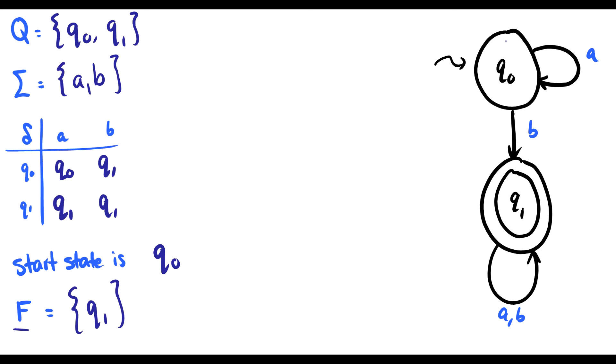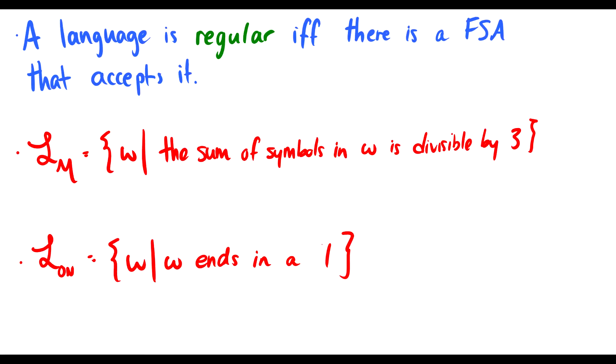Because remember, if we said, okay, Q0 is also an accept state, then this would be the set containing Q1 and Q0. So that's the mathematical definition. Now we're going to move into regular languages. We say that a language is regular if there is a finite state automata that accepts the language.